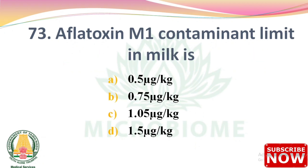Next question: the limit of aflatoxin M1 contaminant in milk is — options: 0.5 µg per kg, 0.75 µg per kg, 1.05 µg per kg, 1.5 µg per kg. The right answer is Option A: 0.5 µg per kg.